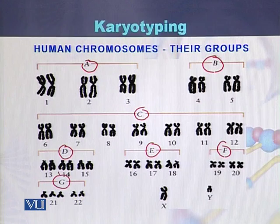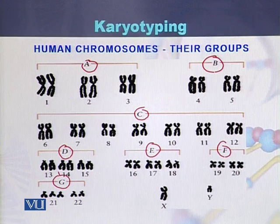So human chromosomes are arranged into different groups: Group A, B, C, D, E, F, and the last group is group G.